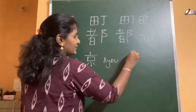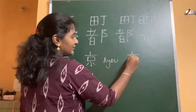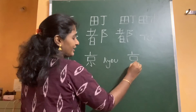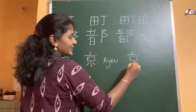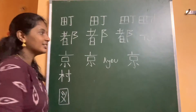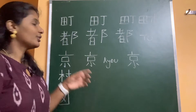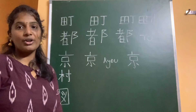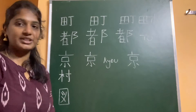First stroke, second, third, fourth, five, six, seven and eight. So this is the kanji that means Kyo. Both together — Tokyo — the capital of Japan.